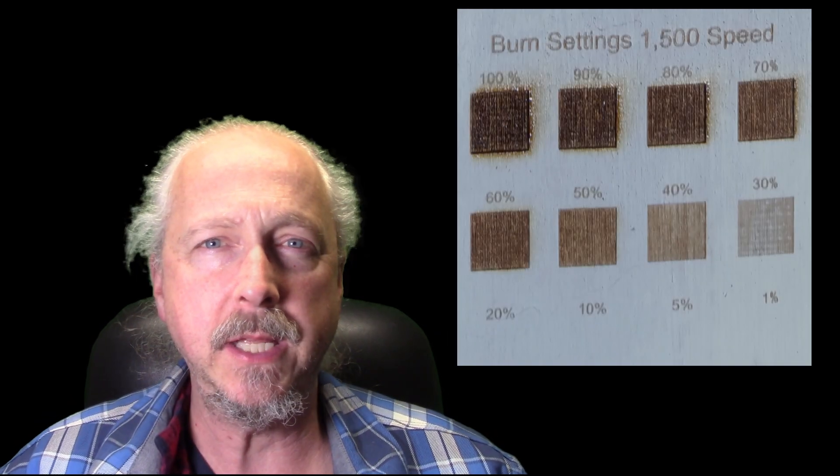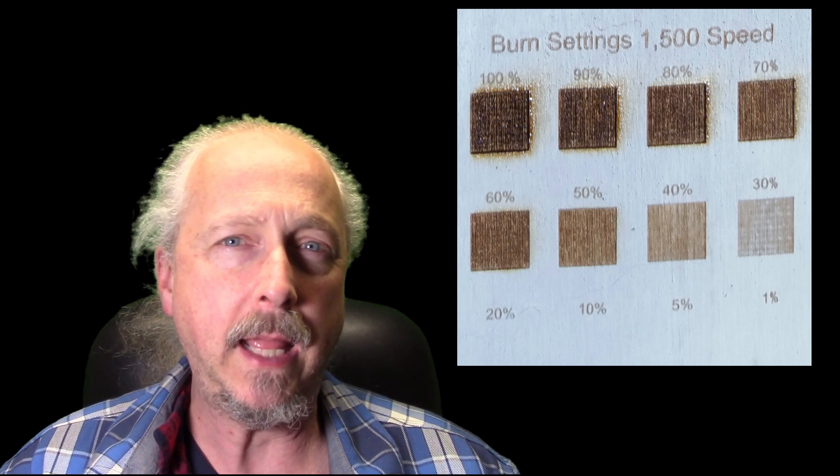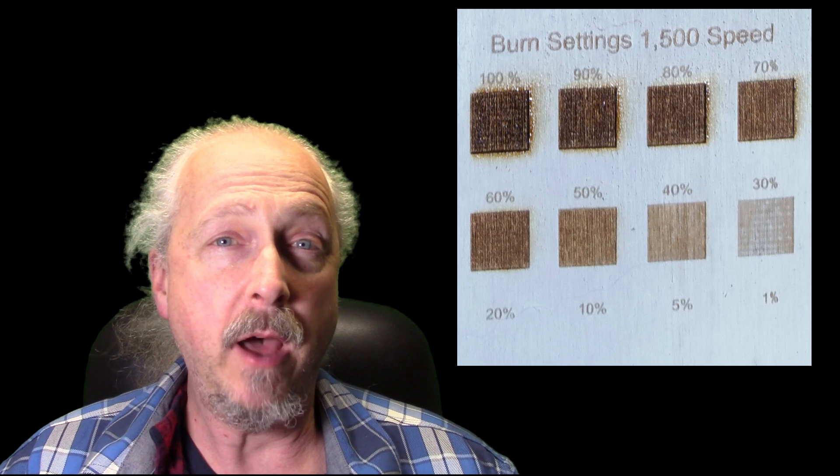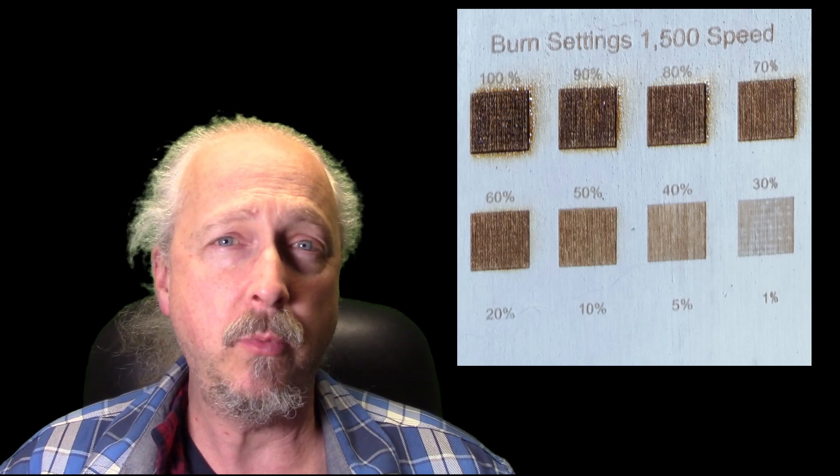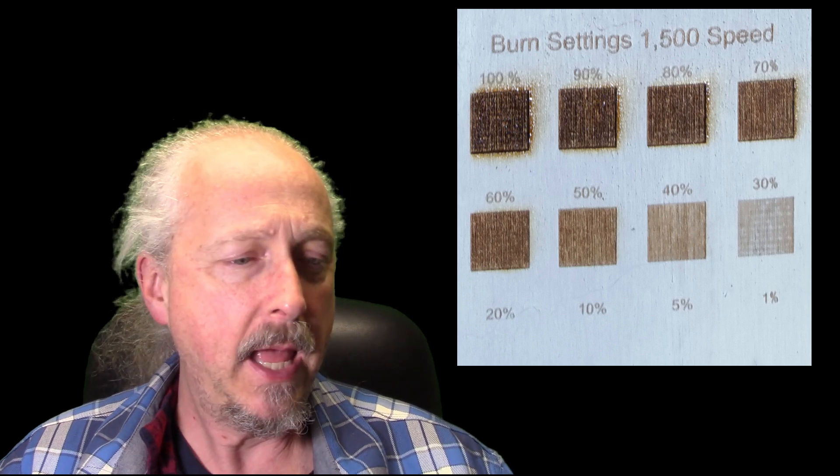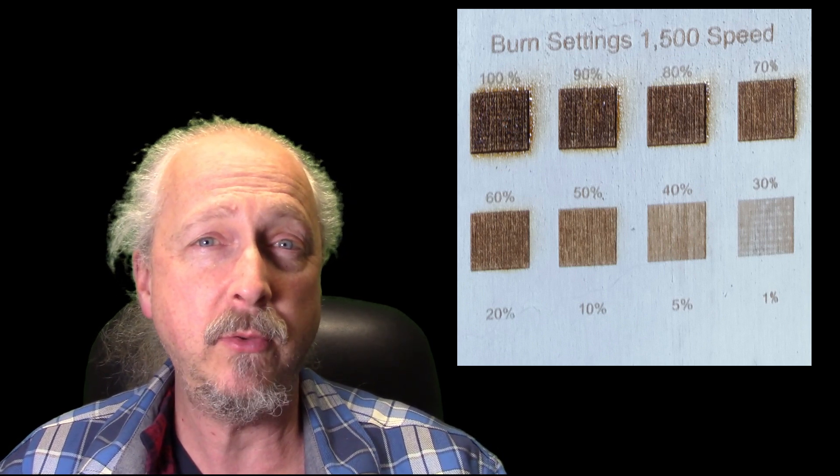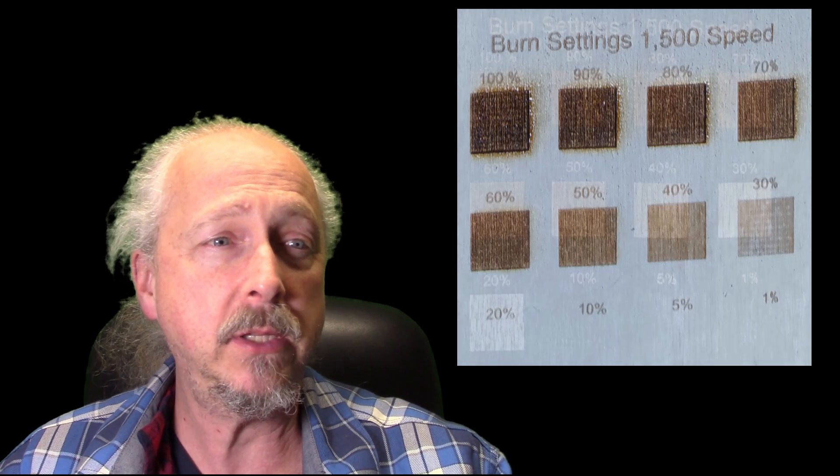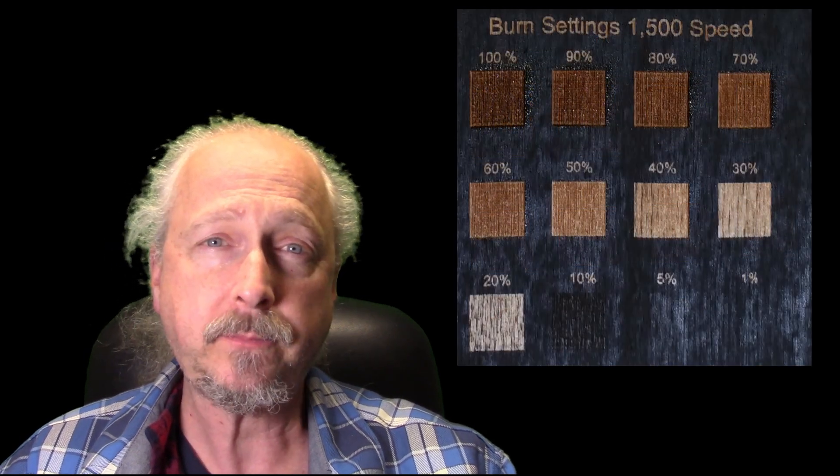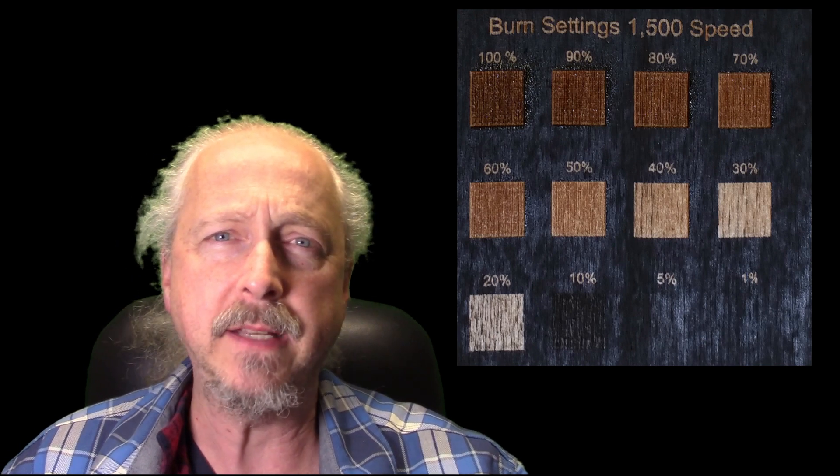The two painted ones seem to turn out fairly well, both the white and the black. At 100 percent they burned deep into the wood, and then it progressively got less and less. Around 30 percent they both were still just getting through the paint. The black one was still getting through at 20 percent, but the white one really wasn't at that point—too reflective, I suppose.